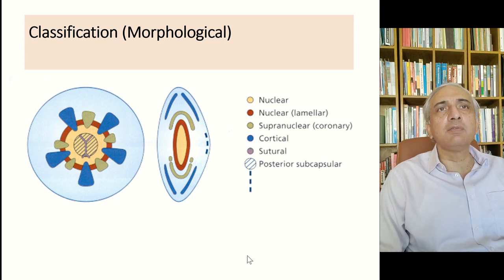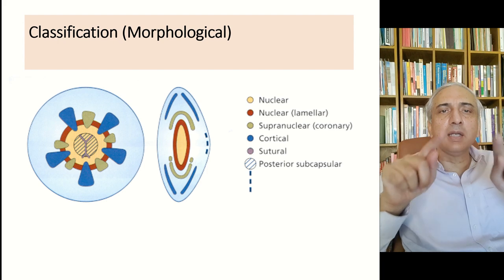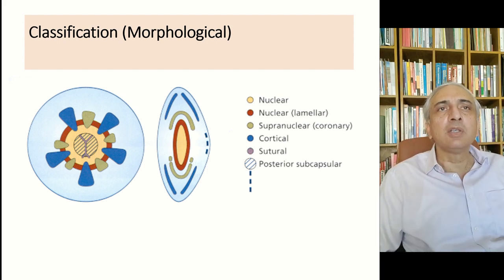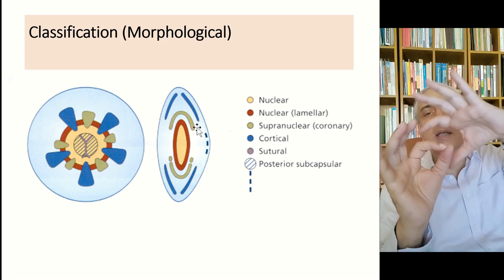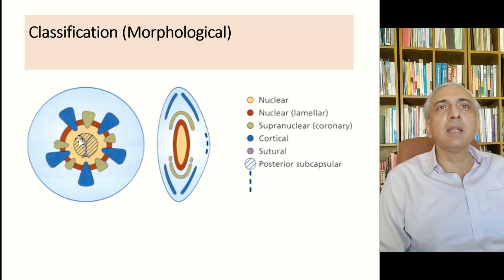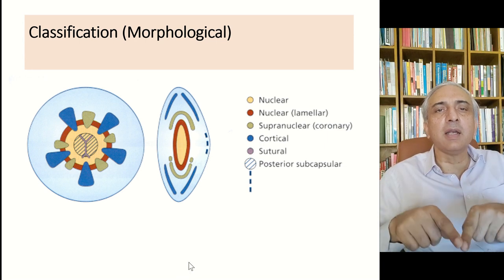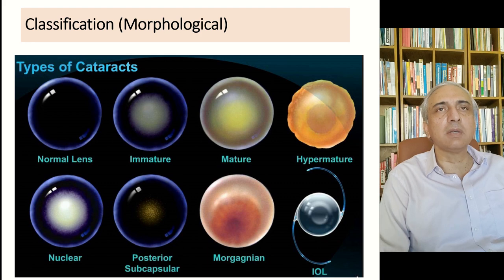Looking at additional cataract types: when only one layer of the nucleus is opacified with clear layers inside and outside, that is called a lamellar nuclear cataract. A cataract in the cortex above the nucleus is called a supranuclear cataract. The Y-shaped opacity — straight at the front and inverted at the back — is called a sutural cataract. The dotted lines represent posterior subcapsular cataract.